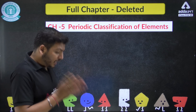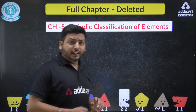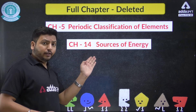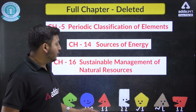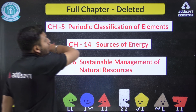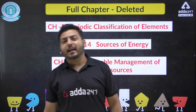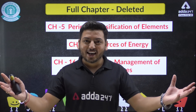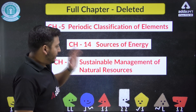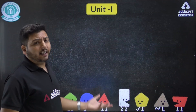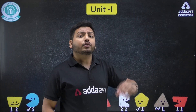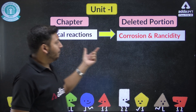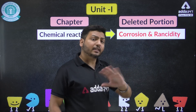Talking about the updated syllabus: 3 chapters have been fully deleted by CBSE — Chapter 5 (Periodic Classification of Elements), Chapter 14 (Sources of Energy), and Chapter 16 (Sustainable Management of Natural Resources). These are fully deleted, meaning you do not have to read these chapters for your board exam. Now let's go unit-wise. In Unit 1, Chapter 1 — Chemical Reactions — the topics of corrosion and rancidity are deleted.